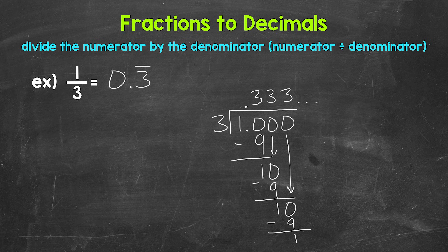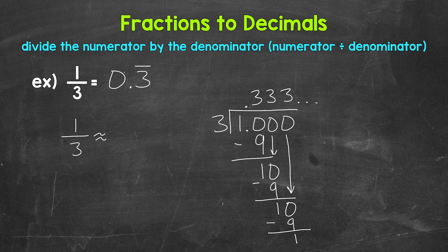Now another option when we have a repeating decimal is to round, and we can round to whatever place we would like. For this example, let's round to the tenths place and the hundredths place. We'll start with the tenths place. So 1 third is approximately — and I'm using the approximately symbol here since we are rounding, it's not exact. In the tenths place, we have a 3 with a 3 in the hundredths, so this rounds to 3 tenths. So 1 third is approximately 0.3.